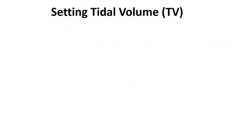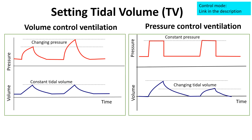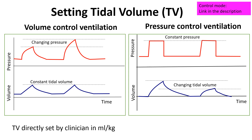The approach to tidal volume setting varies between different modes of mechanical ventilation. In volume-controlled ventilation, the clinician sets the desired tidal volume, and the ventilator delivers this volume with each breath, adjusting the inspiratory pressure based on the patient's lung compliance and airway resistance. This mode ensures consistent tidal volume delivery, although peak inspiratory pressures may fluctuate.